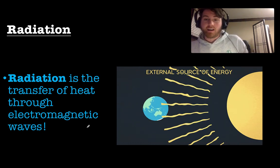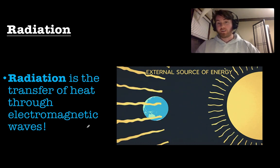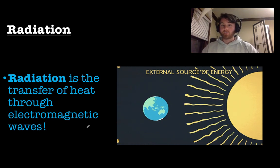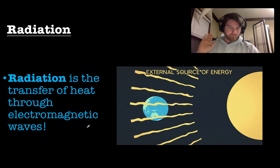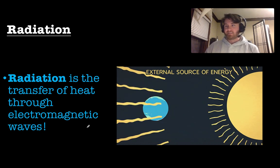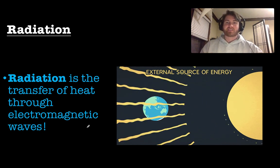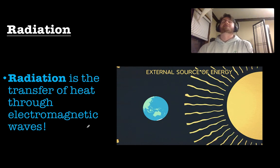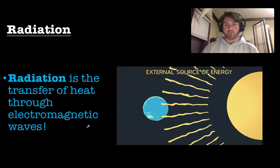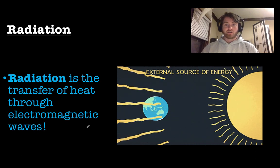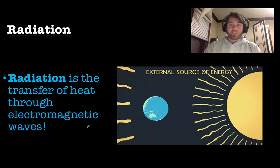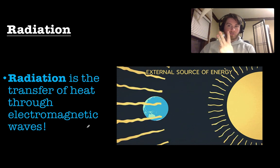The last method is radiation, and this is the one we're really focusing on today. Radiation is the transfer of heat through electromagnetic waves. The one you know best is the sun — if you go outside and stand there, you can feel that heat transferring. That's radiation. Those are the three ways heat always transfers: conduction, convection, radiation.